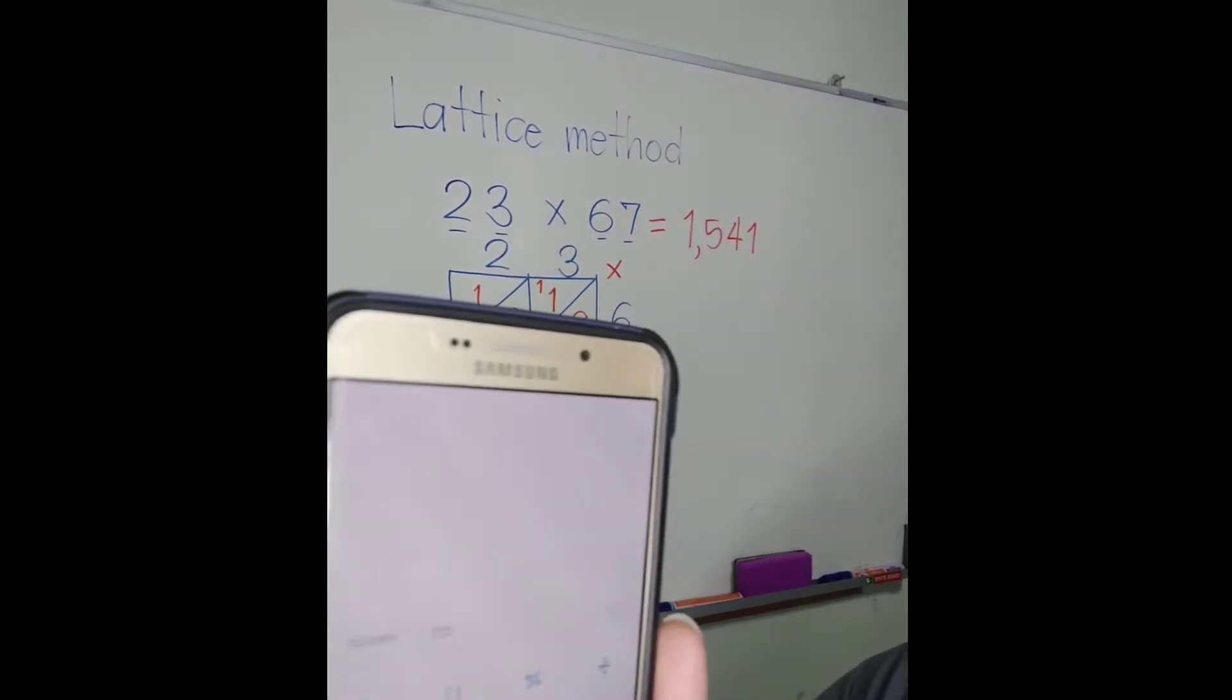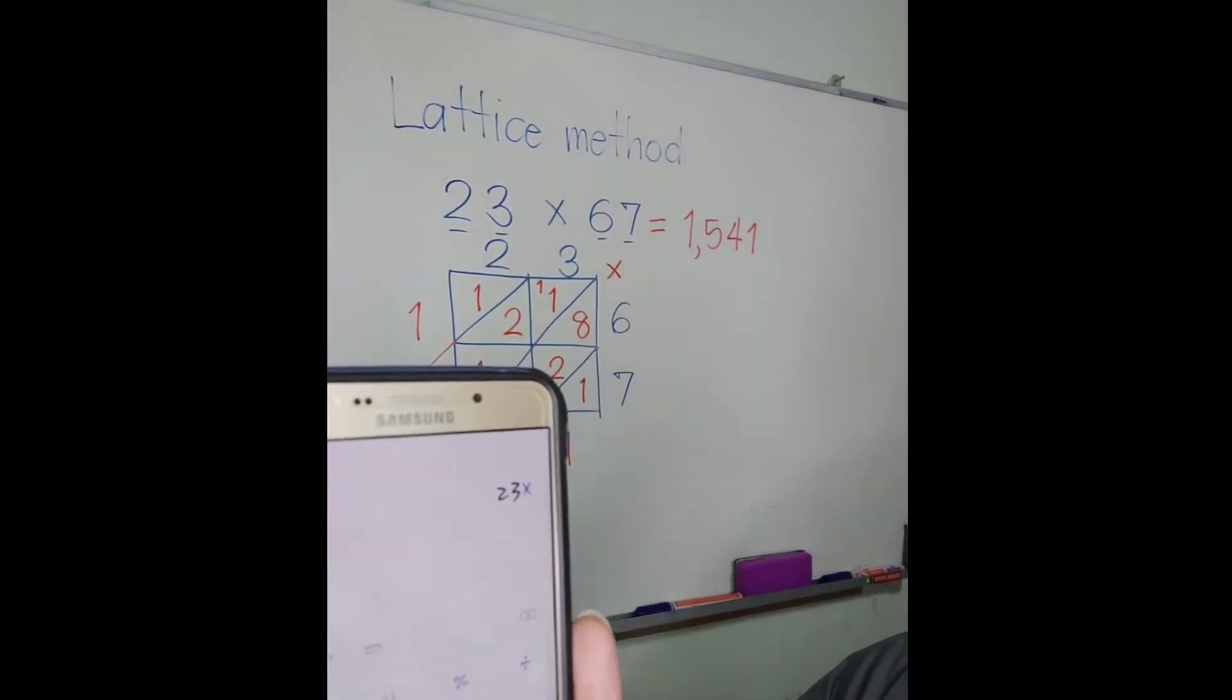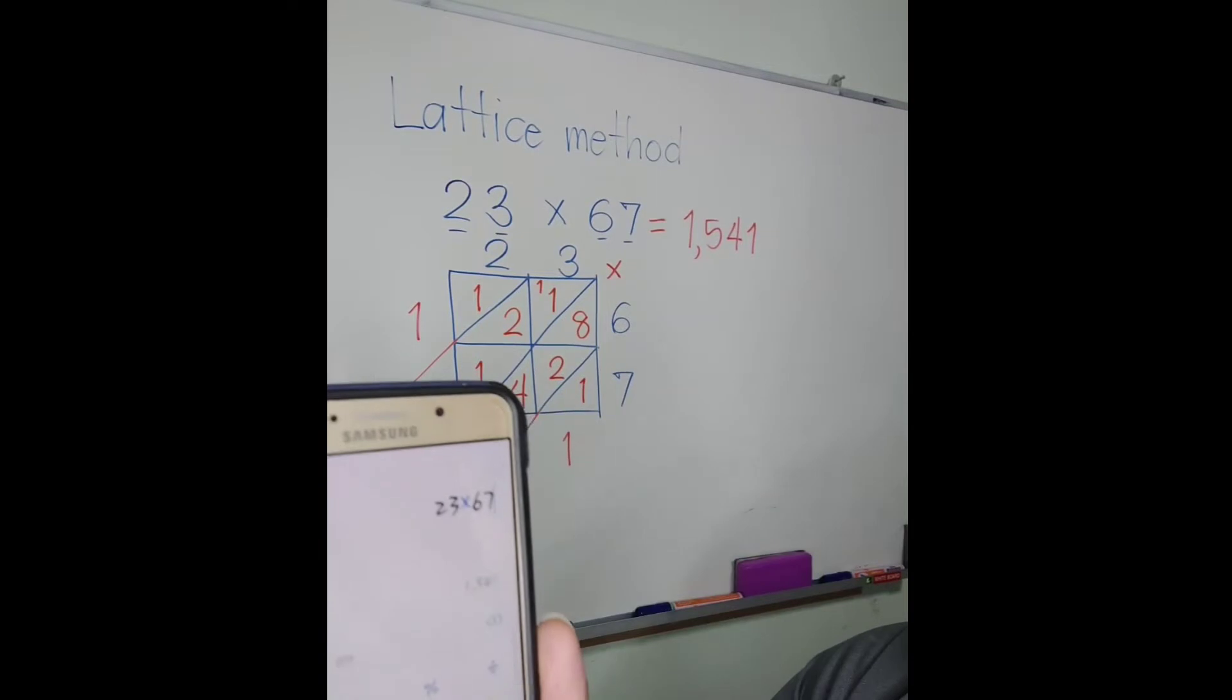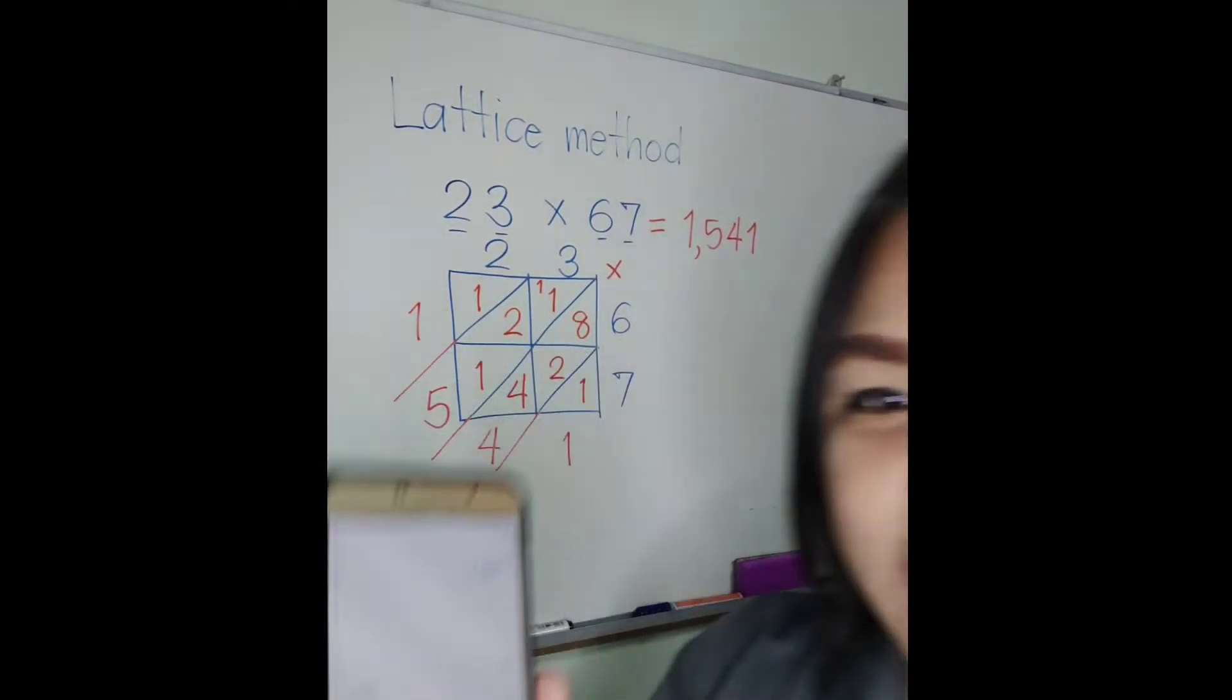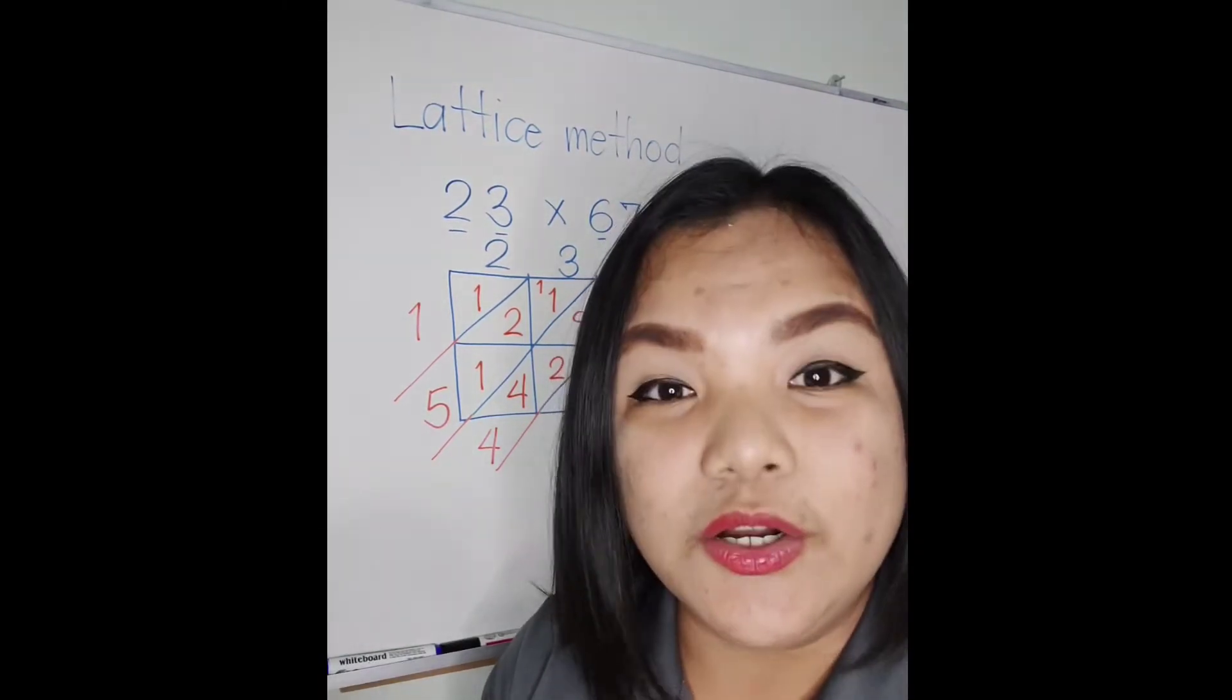Let's check the answer! Okay, so we have 23 times 67. Boom! Wow, correct! 1,541. Okay!